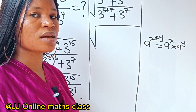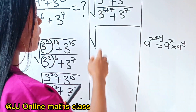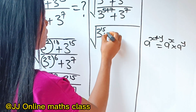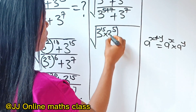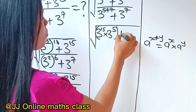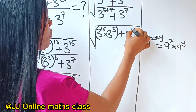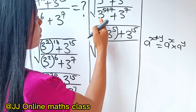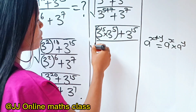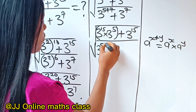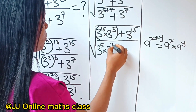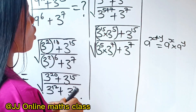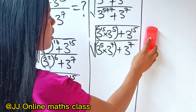We are going to apply this law here. We write this as 3 to the power of 15 times 3 to the power of 5, plus 3 to the power of 15, divided by — the same thing goes here — 3 to the power of 5 times 3 to the power of 7, plus 3 to the power of 7.